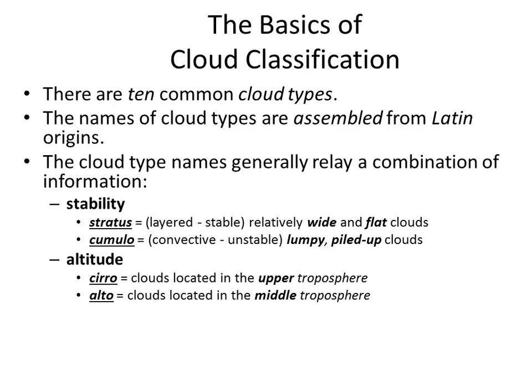A low-level cloud doesn't get an altitude designation. And then the last thing is: is it raining or not? You'll see the two rain clouds — the nimbostratus and the cumulonimbus. You'll see NIMB somewhere in their names. Those are the two precipitating clouds.